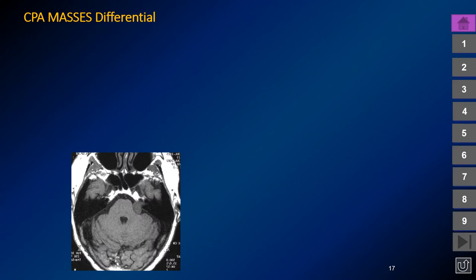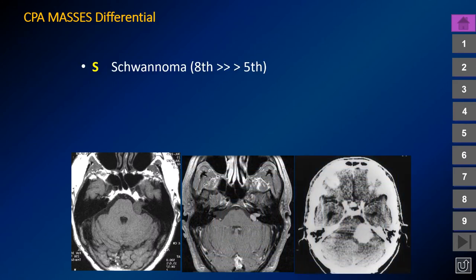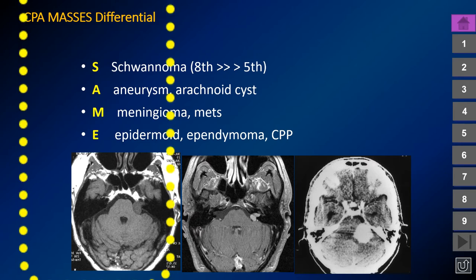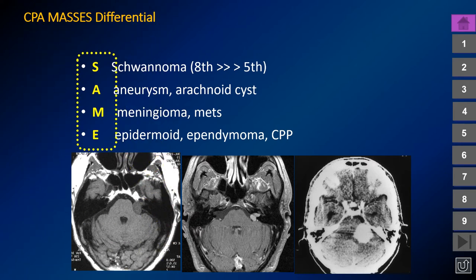The differential diagnosis for cerebellopontine angle masses includes schwannoma, vascular lesion such as an aneurysm or arachnoid cyst, meningioma or metastatic disease, epidermoid inclusion cyst, or perhaps ependymoma and choroid plexus papilloma. Those latter two lesions arise inside the ventricle but often follow CSF flow into the lateral recess and through the foramen of Luschka into the cerebellopontine angle cistern. We always give this same differential diagnosis for a CPA mass.